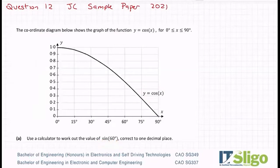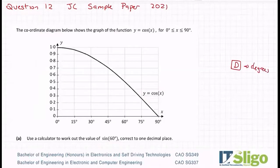Use a calculator to work out the value of sine 60 correct to one decimal place. The first thing you need to double check is that you've got the little degree symbol up the top of your calculator, and it's colored in dark — that's D for degrees. You can measure angles in radians as well, so make sure you don't have an R up there.